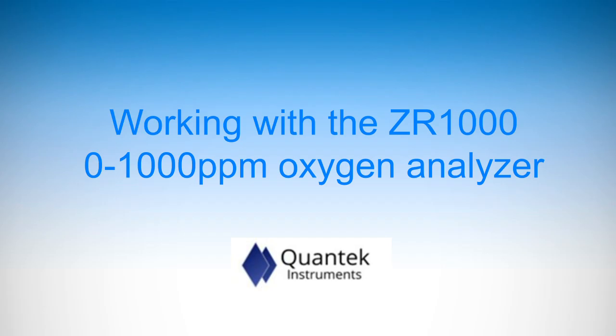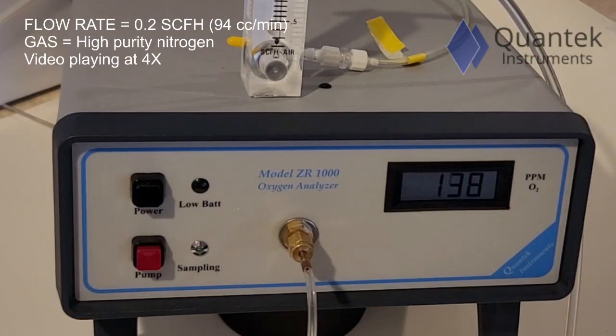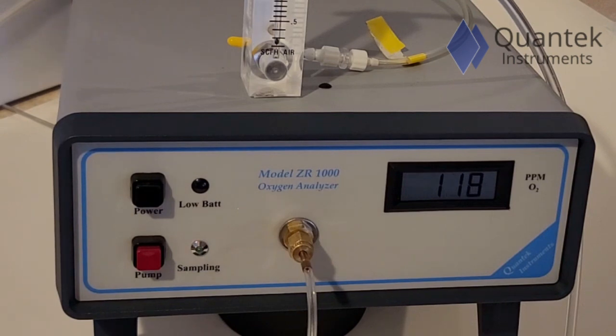Today, we'll be working with the Quantek Instruments ZR1000 0-1,000 ppm oxygen analyzer. First, we're flowing 94 cc's a minute of pure nitrogen directly into the instrument without activating the pump.